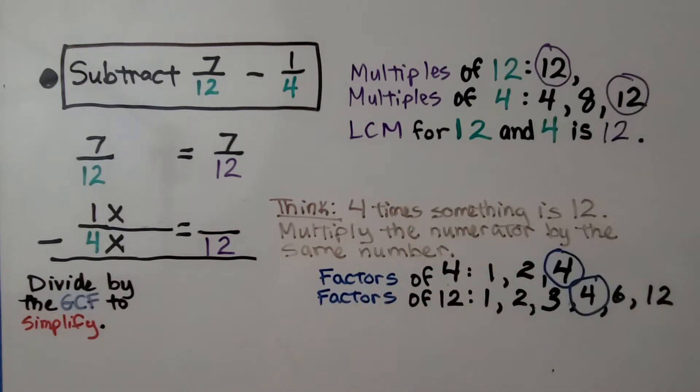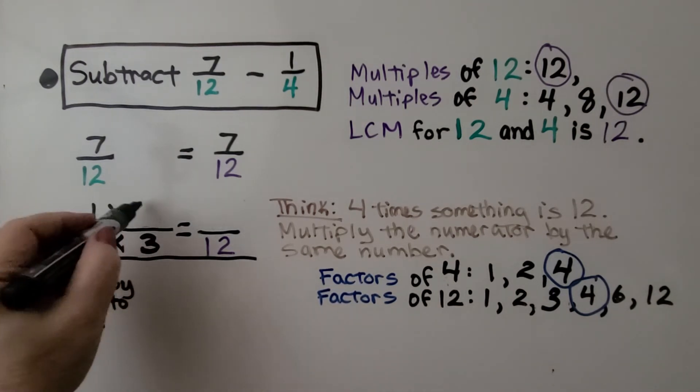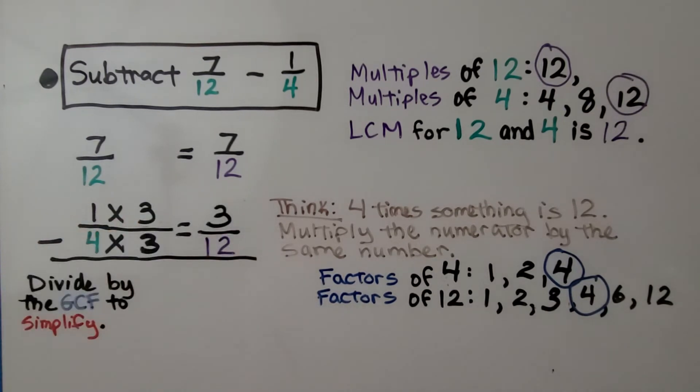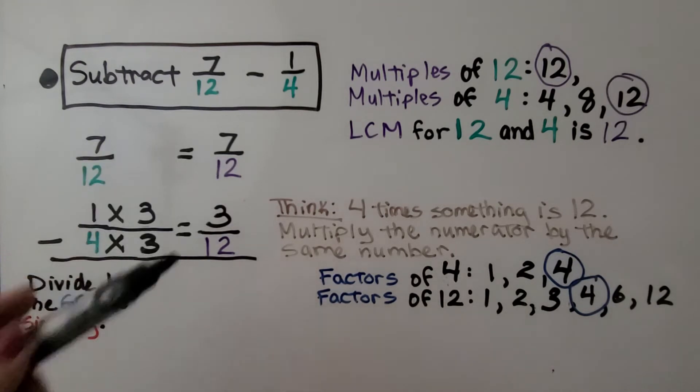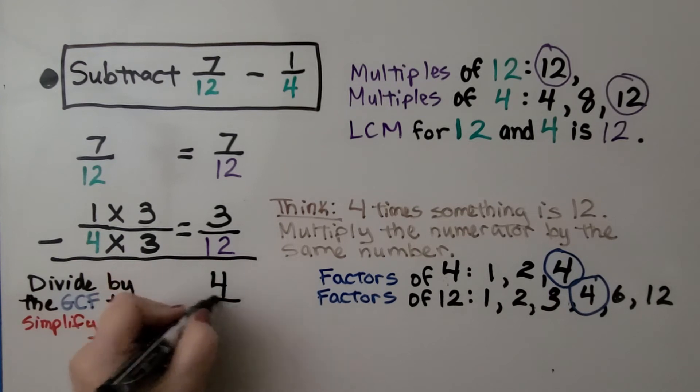That's the least common multiple for 12 and 4. So this 7/12 is just going to slide across and 4 times something is 12. That would be 3. If one gets jealous, it wants to be multiplied by 3. That means we have 3/12. Now we can do 7/12 - 3/12. We just do 7 minus 3, which is 4, and it's over 12.